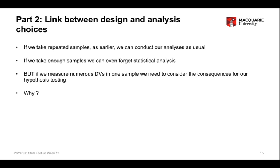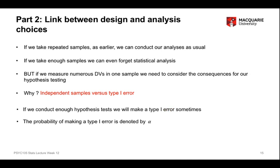And if we do that, then we need to consider the consequences for our hypothesis testing. It's because of the idea of independent samples versus type 1 error. If I conduct one analysis on one sample, that's fine, but as I conduct more and more analyses or test more and more hypotheses, my type 1 error is going to accumulate. And if I conduct enough hypothesis tests, at some point I will almost certainly make a type 1 error. But of course, I won't know which sample or which hypothesis test is the type 1 error and which one isn't.